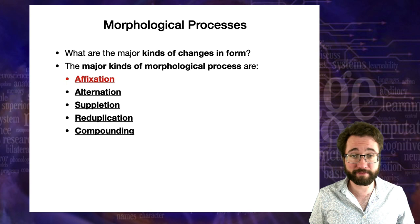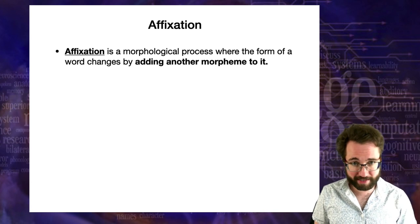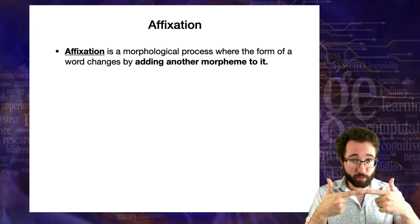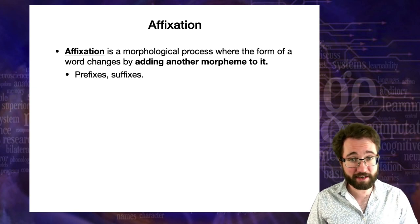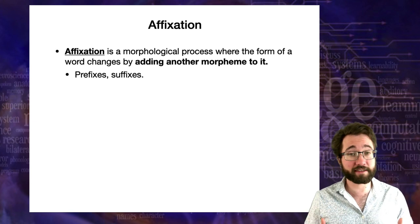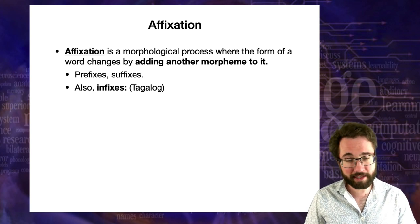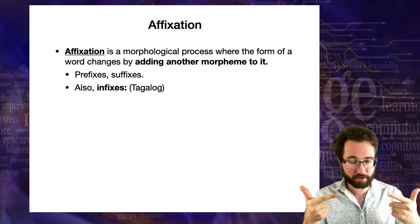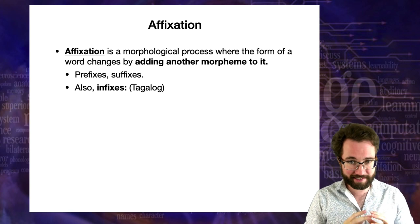Let's start with affixation, which is what we've been talking about all along. Affixation is a morphological process where the form of a word changes by adding another morpheme to it — you take one morpheme and stick another morpheme next to it. That's affixation: adding a prefix or suffix. There are also things called infixes. A prefix goes before a root, a suffix goes after the root, and an infix is a morpheme that goes into the middle of the root, intruding inside it.